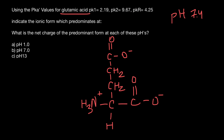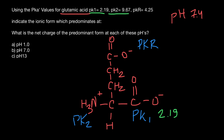Our first step is to identify pK1, pK2, and pKr. pK1 is the pKa of the backbone carboxylic acid group. pK2 is the pKa of the amino group. pKr is the pKa of the secondary carboxylic acid side chain — R stands for the R group. The values are: pK1 = 2.19, pK2 = 9.16, and pKr = 4.25.